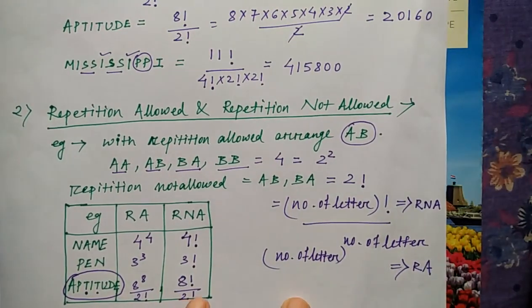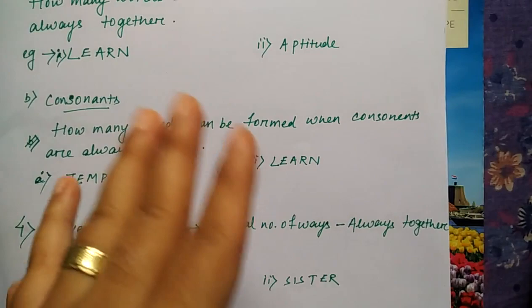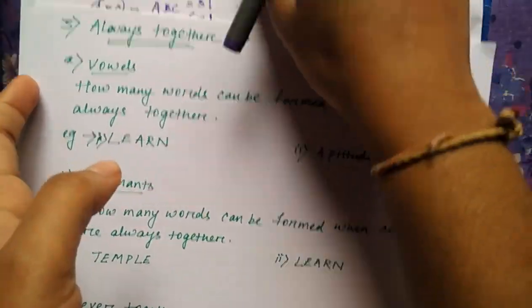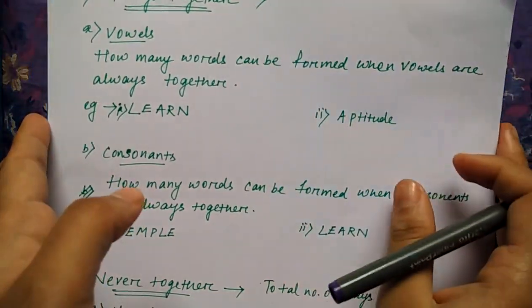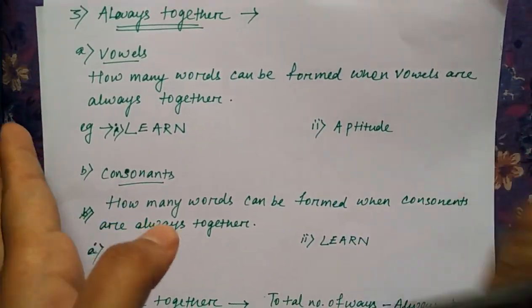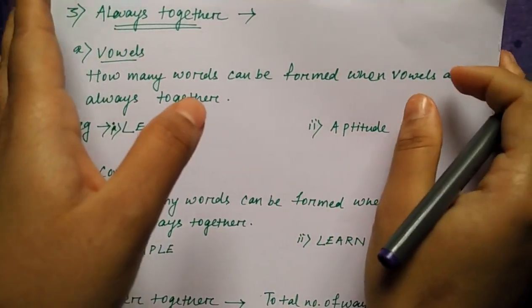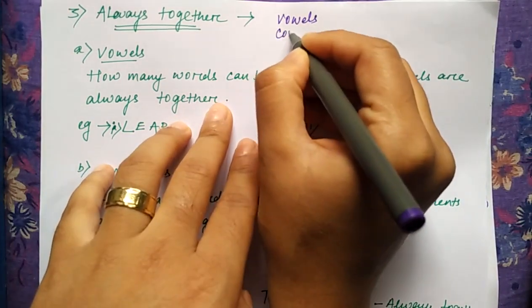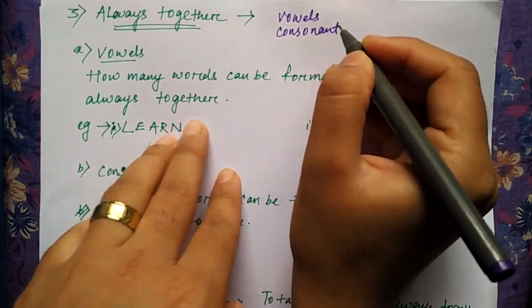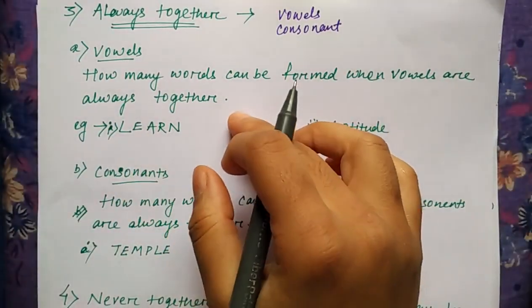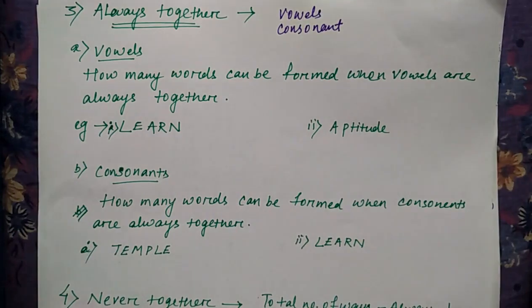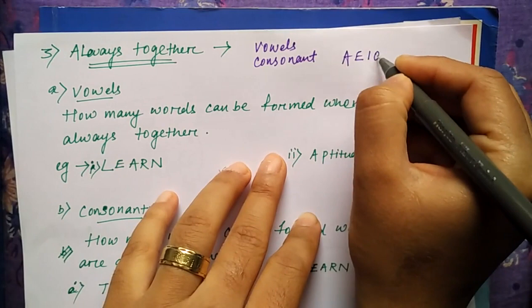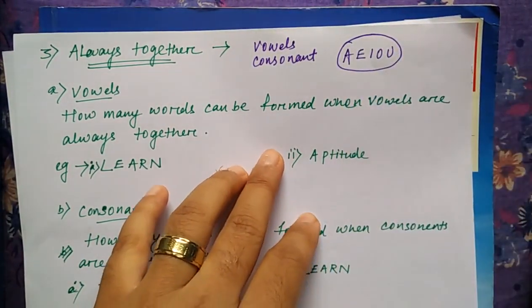Now we will see the third type — that is the 'always together' concept. In always together, you can have three types of things: I told you two types — that is vowels or consonants, or you can have any other word. So first we will go for vowels. How many words can be formed when vowels are together? First of all, you should know what the vowels are: A, E, I, O, U — these are the five vowels in our 26-letter alphabet.